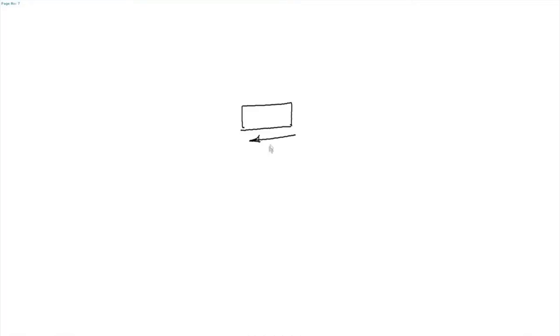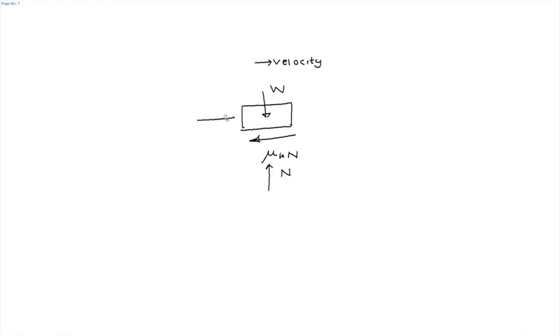Student 1165 asks: for a block on a rough horizontal plane, how do we apply constant velocity? On a rough surface, the friction force is μ_k times the normal reaction. To maintain constant speed (no acceleration), apply an external force P equal to μ_k·N in the direction of motion. That balances the kinetic friction and the block moves at constant velocity.